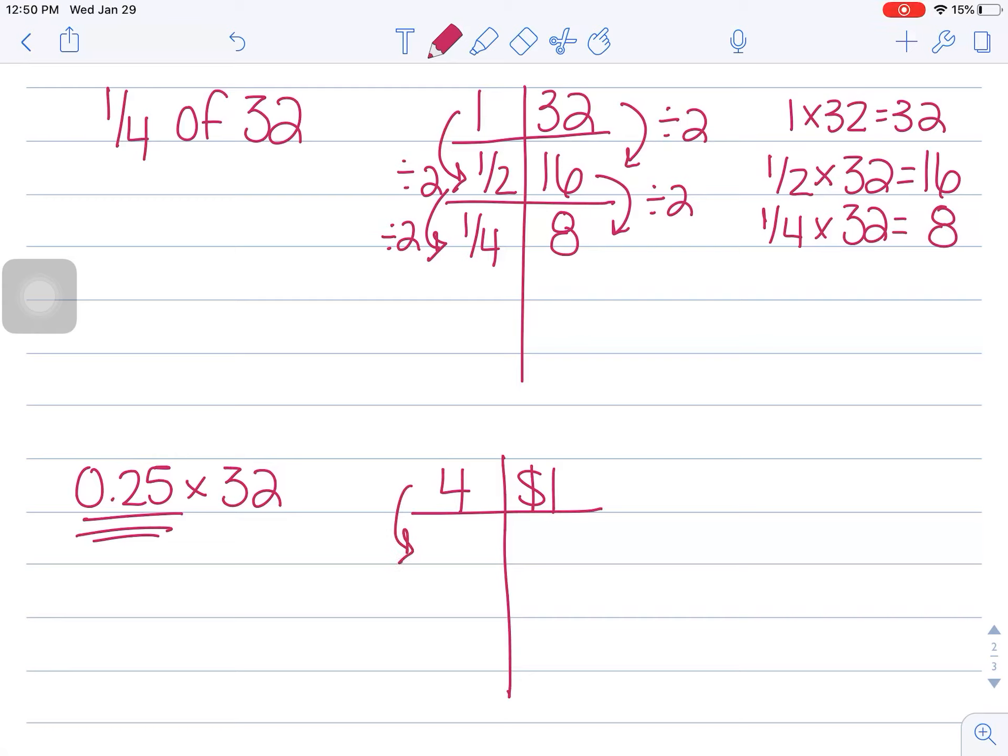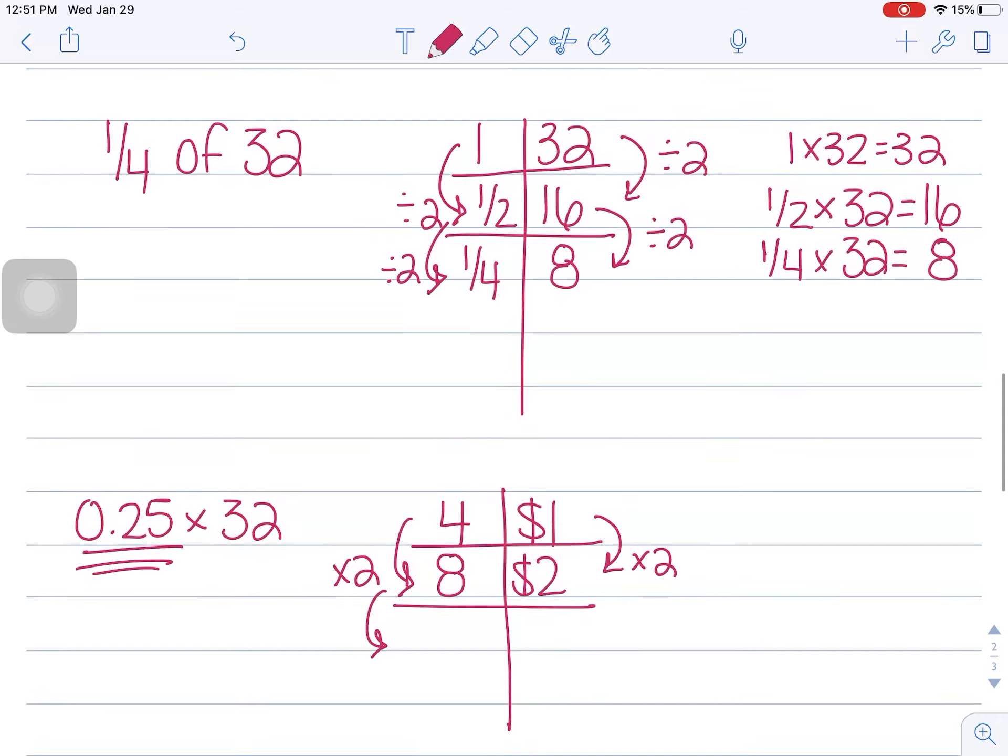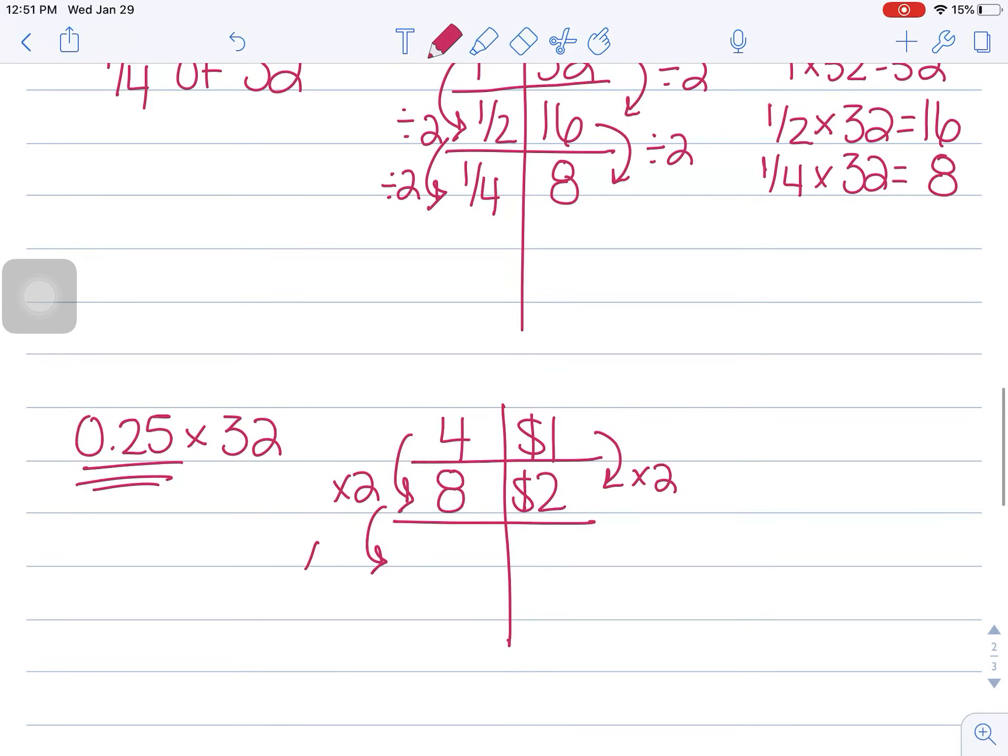And I know that if I multiply that by 2 or double it, I have $2 or eight quarters, right? Let's keep doing this until I get to 32. So if I double 8, get 16. Double 2, I get $4.